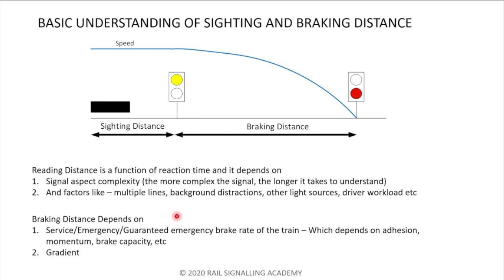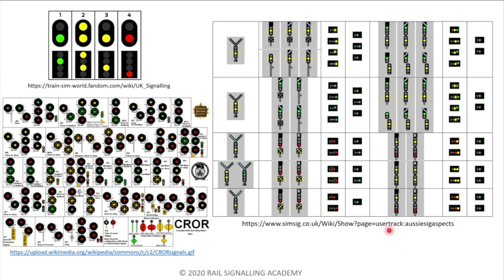The second key concept is braking distance. At a high level, braking distance depends on the service brake rate, emergency brake rate, or guaranteed emergency brake rate — I'll go into details in another video. These brake rates are provided by the rolling stock manufacturer and depend on elevation, momentum, and brake capacity. Gradient also matters: a downgrade requires longer braking distances, while an upgrade helps you stop earlier.